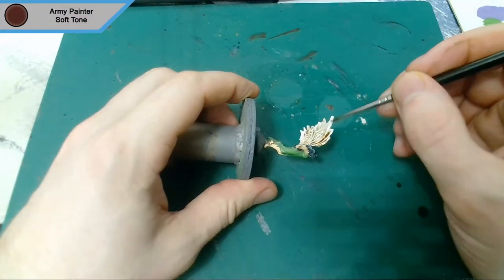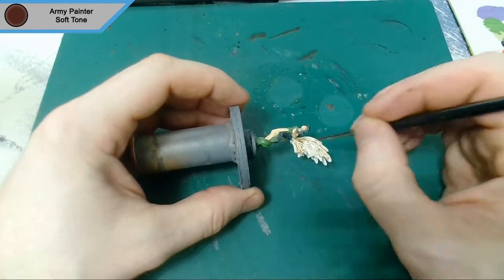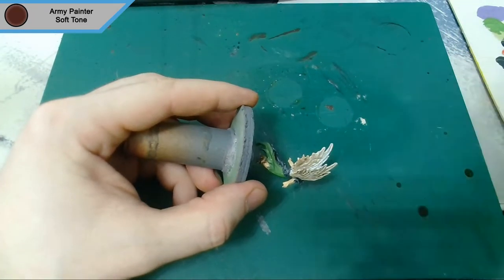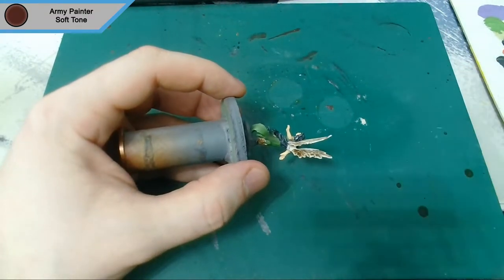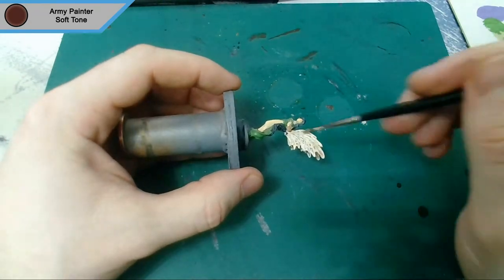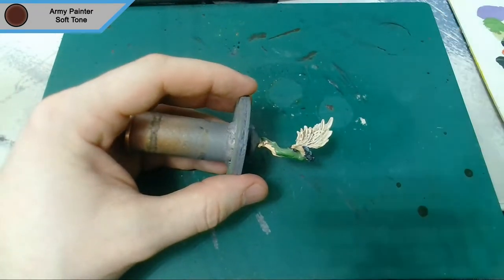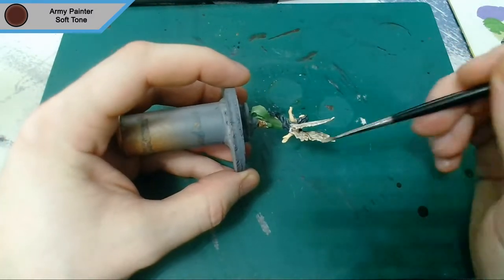Now onto the first of the washes and this is Army Painter soft tone, just for the wings. It was just the highlight, the edges. I do put it on there and I'll come back straight away and just brush off as much as possible, which I'm doing now. This is solely meant for just picking up edges and that's it.